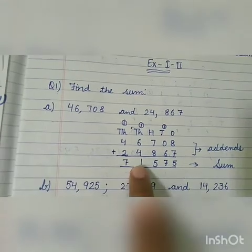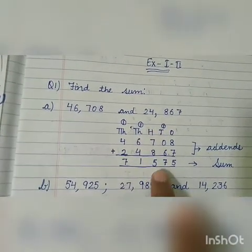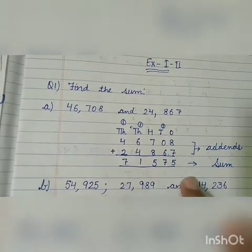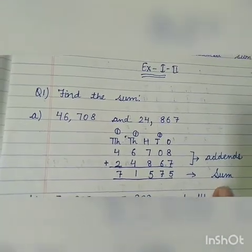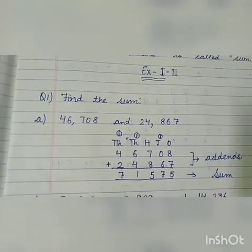So the answer is seventy-one thousand five hundred seventy-five. This is your sum. Got it? This is how you find the sum of two numbers.